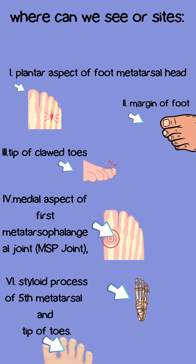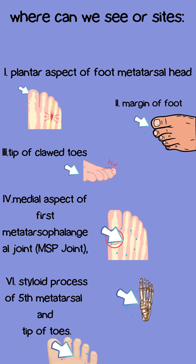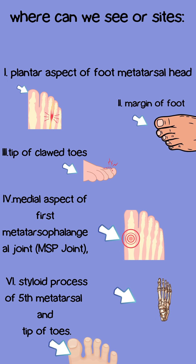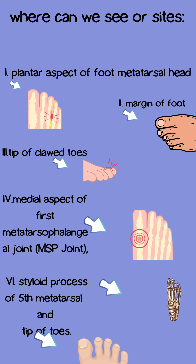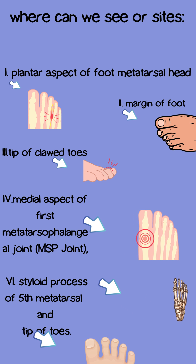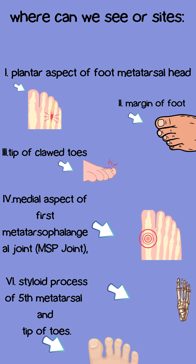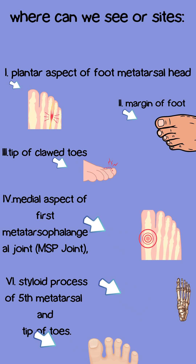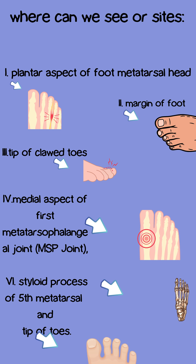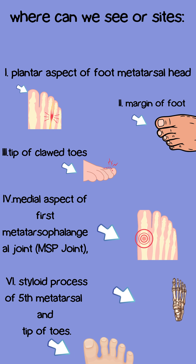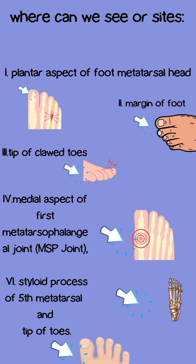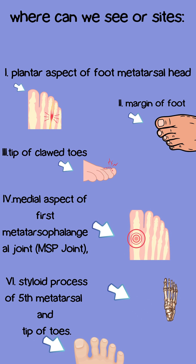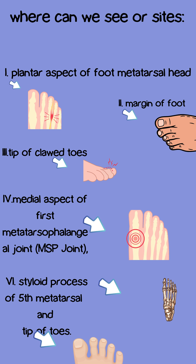Sites where ulcers can be seen: plaques of callous skin develop on pressure points such as the plantar aspect of the foot at the metatarsal head and tip of clawed toes. Ulcers can be neuropathic or neuroischemic, occurring at the margin of the foot due to compression from ill-fitting shoes — at the medial aspect of the first metatarsophalangeal joint, styloid process of the fifth metatarsal, and tip of toes.